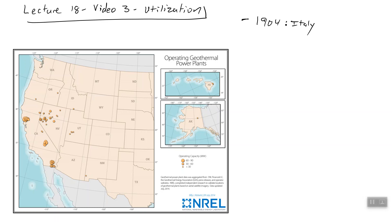The person who invented it — I didn't get his name unfortunately — used it to light four light bulbs. So with geothermal power, they were able to light four light bulbs and prove that with just heat from the earth, probably in the form of steam, we can get some electricity.